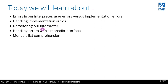What we're going to see is that this library that handles errors is actually very similar to the kind of API that we developed to handle mutation. And this is the monadic interface.